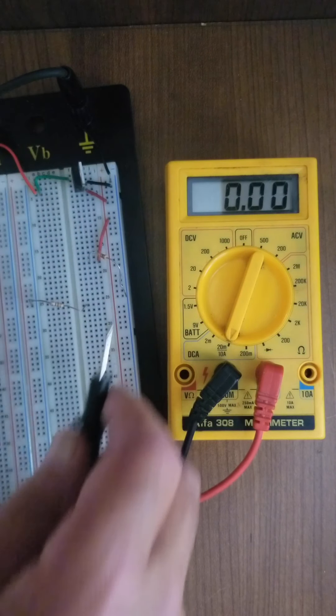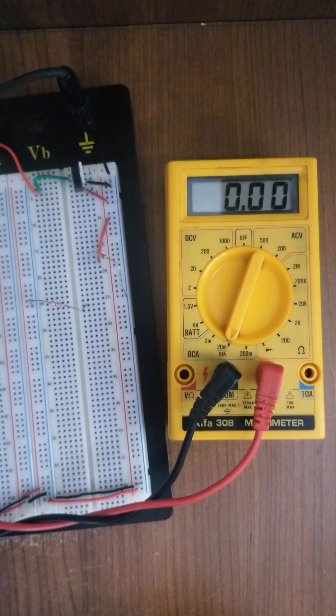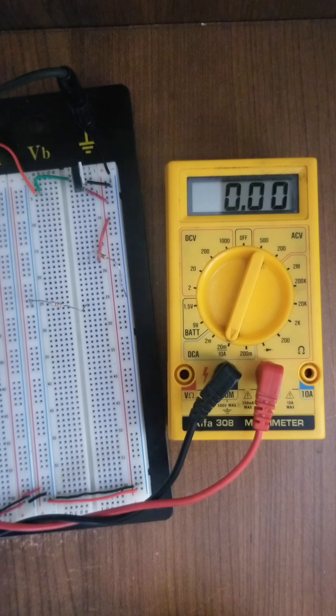So hopefully when you divide the voltage of the battery by the equivalent resistance of the circuit, which in this case is the sum of R1 and R2, that should give you exactly that number. In which case that means we verified Ohm's law, we verified the equivalent resistance of two resistors in series, and we verified Kirchhoff's voltage law.